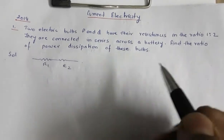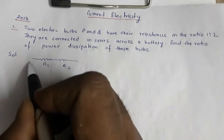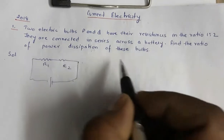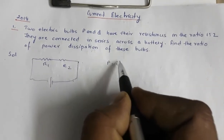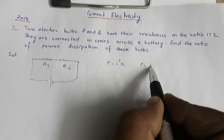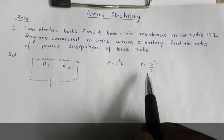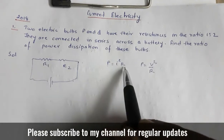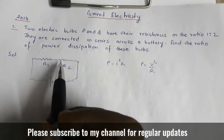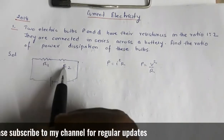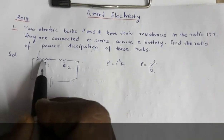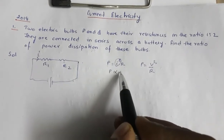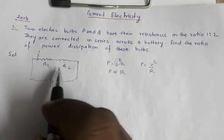You have two resistors R1 and R2 connected in series, and this combination is connected to a battery. Now for power, there are two formulas: P = I²R and P = V²/R. For P = V²/R, P is inversely proportional to R, but the condition is V is constant. For P = I²R, P is directly proportional to R provided I is constant. In series, the two resistors R1 and R2 carry the same current, so current is constant, which implies power is directly proportional to R.